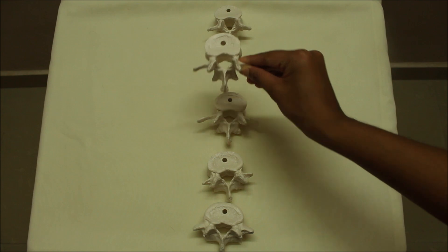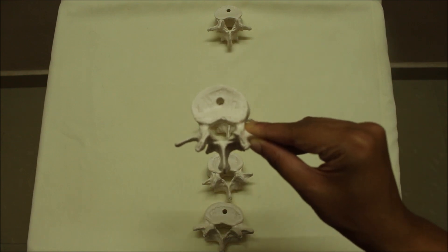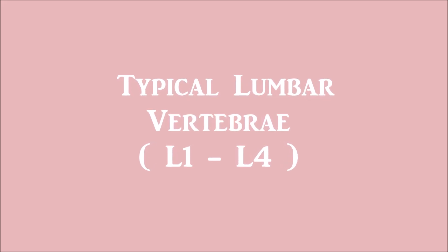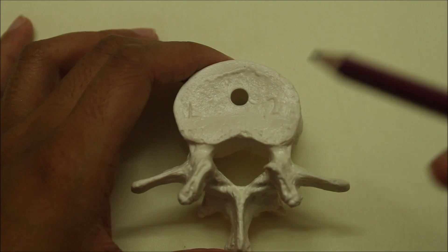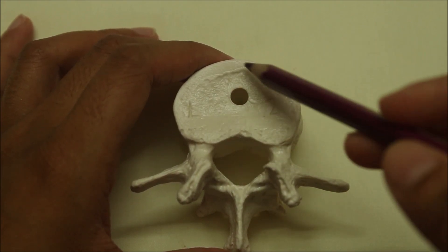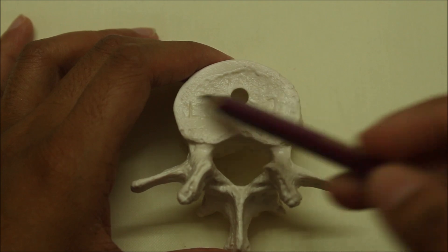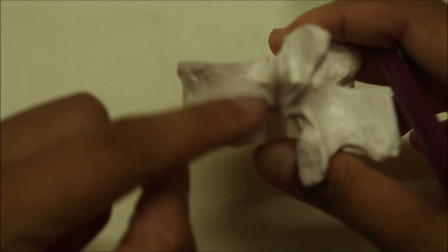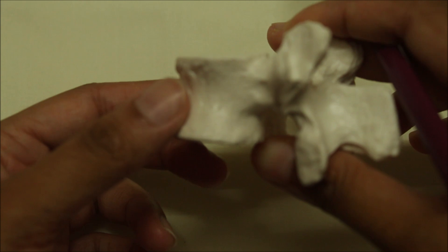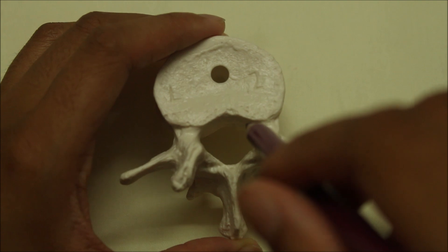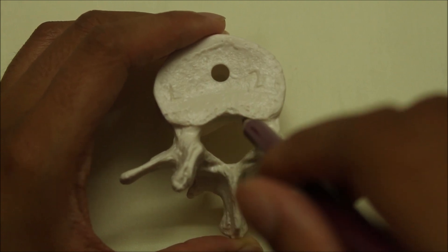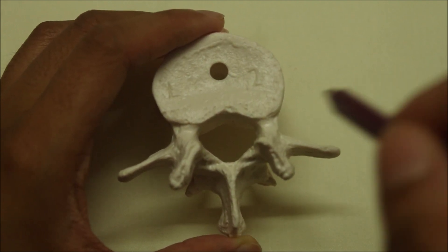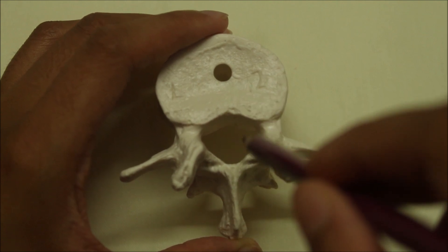Now let's look at the features of a typical lumbar vertebra. The body is large and kidney-shaped. It is wider from side to side than from before backwards. The height of the body is slightly greater anteriorly than posteriorly, which contributes to the forward convexity of the lumbar spine. The vertebral foramen is triangular in shape and is larger than in the thoracic region but smaller than in the cervical region.